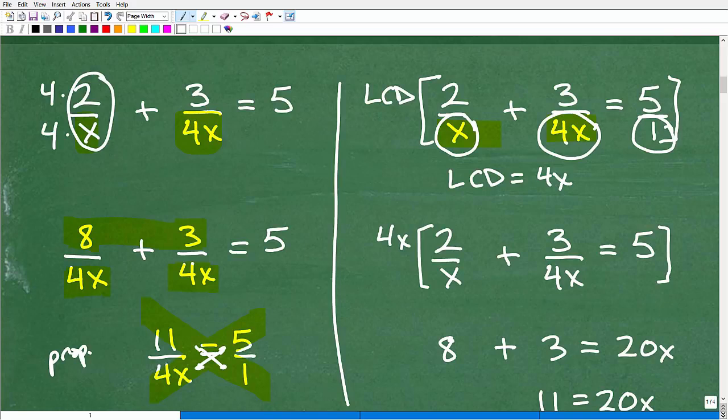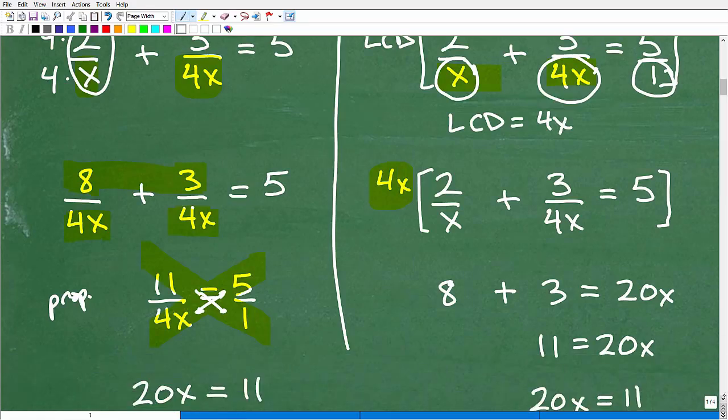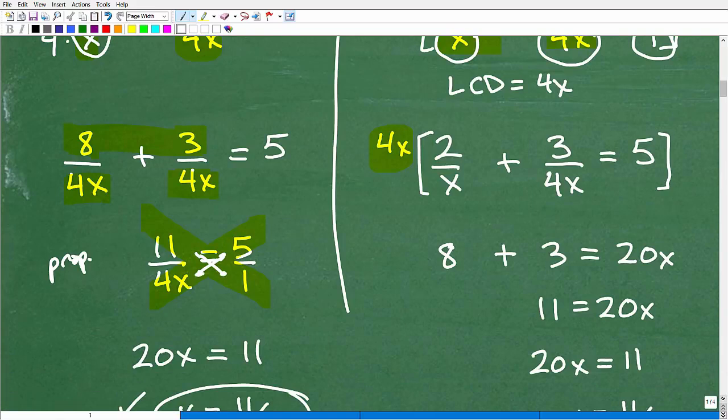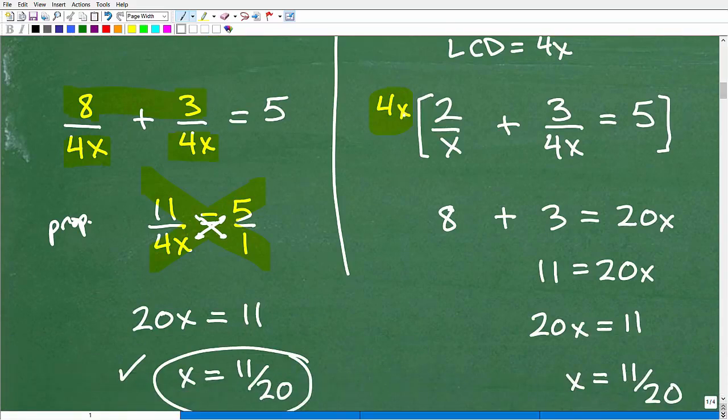If you multiply your entire equation by the LCD, you'll clear out the fractions. I'm just going to get rid of the fractions right up front, and I'm going to multiply by the LCD. So let's go ahead and multiply each term of the equation by the LCD, which is, of course, 4x in this example.